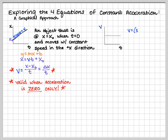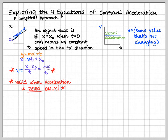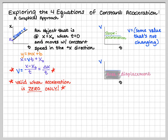If we take this position graph and convert it into a velocity graph — since the position graph was constant velocity — the velocity function is just going to be a constant, like 10 meters per second. The slope of this line represents the acceleration, and since it's horizontal, the slope is 0. Another interesting thing about a velocity versus time graph is that the area under the curve equals your displacement, or delta x.